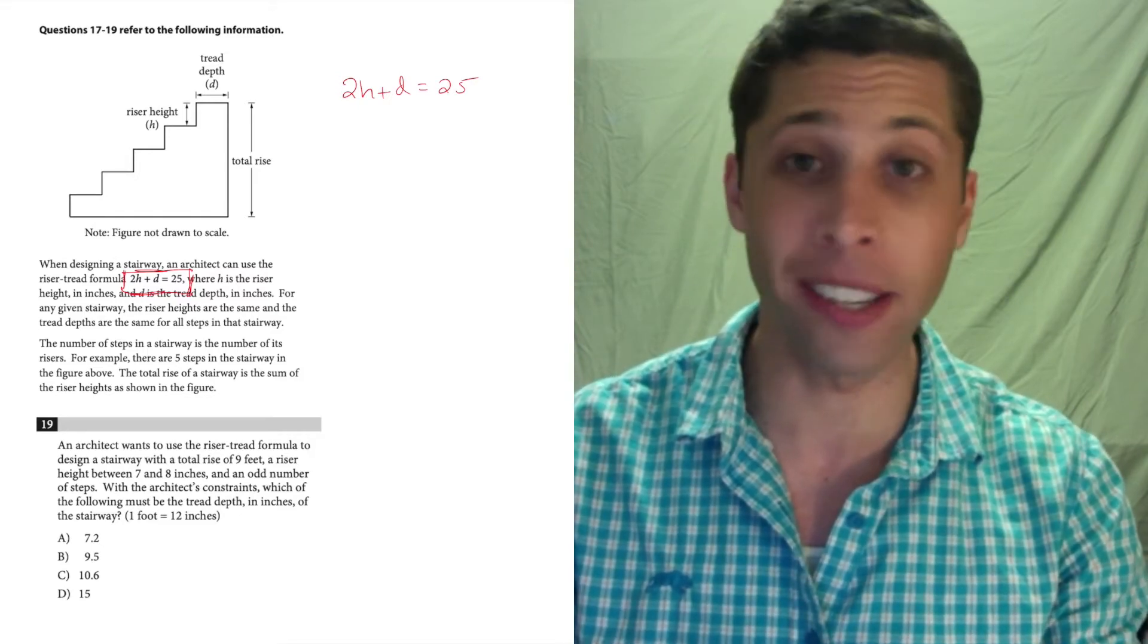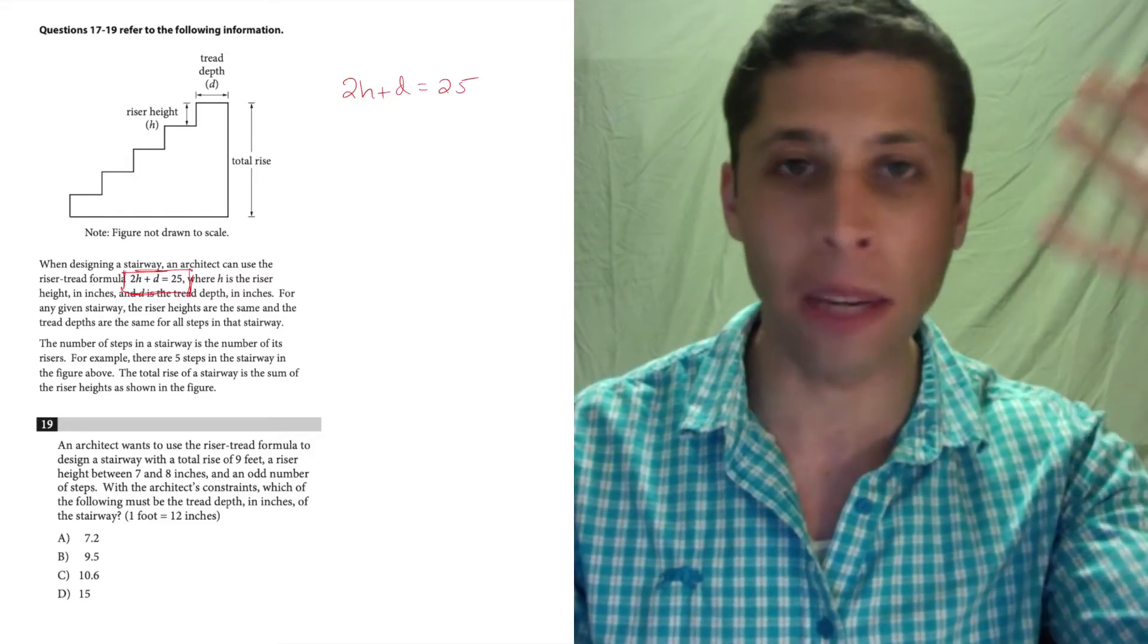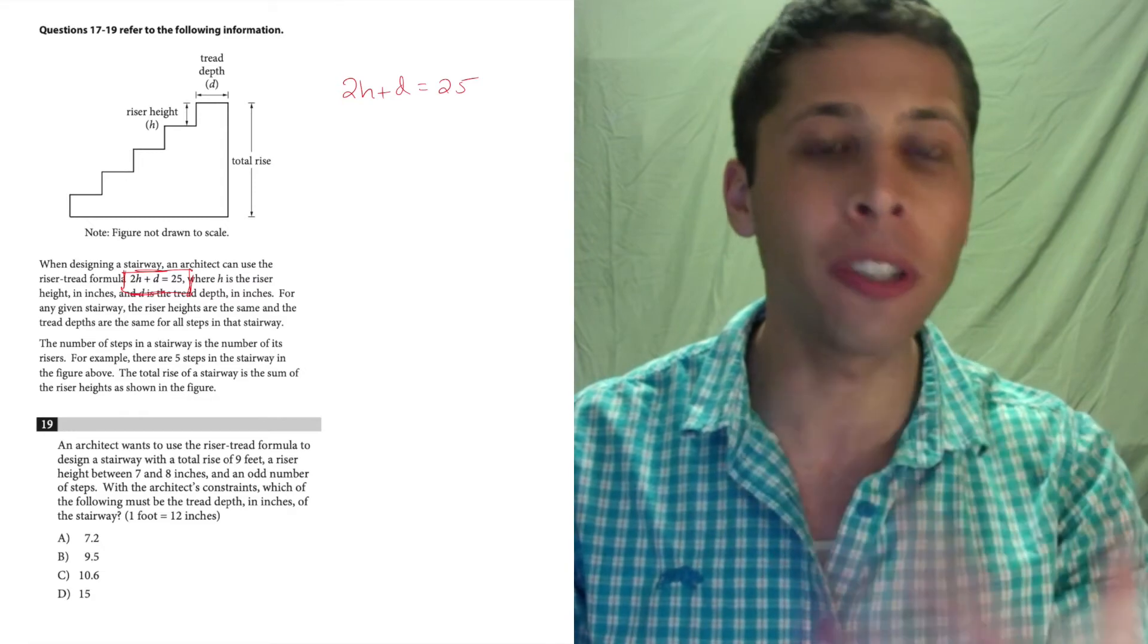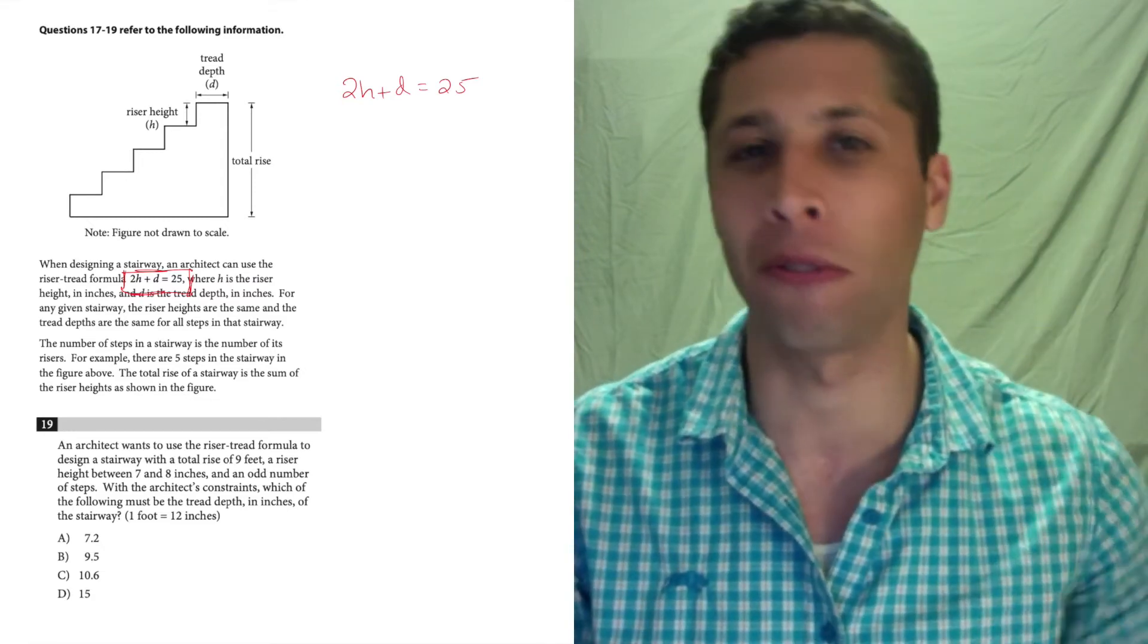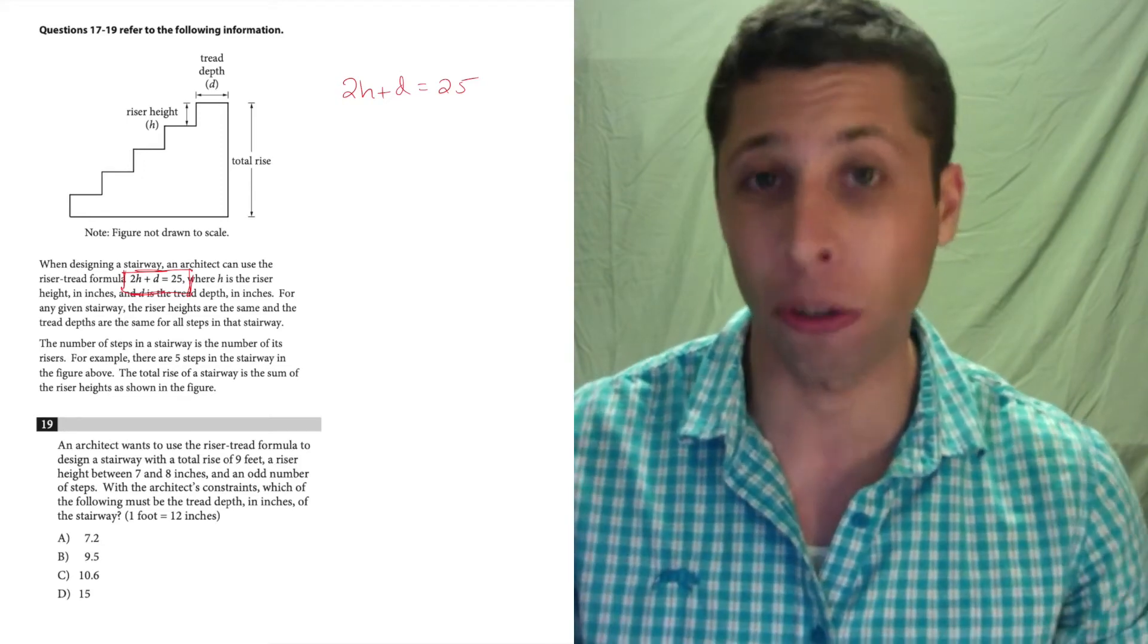But I do have some tools at my disposal that can make my life a little bit easier. One important piece is we still have in the original story an equation, 2H plus D equals 25. You should write that out on your page right away. You're going to need it. You'd be surprised how much you can figure out as you start writing.